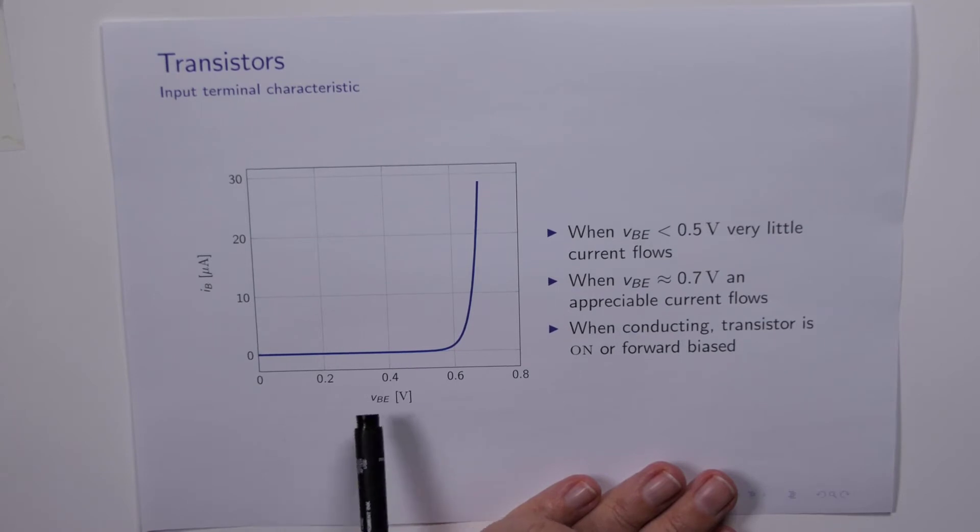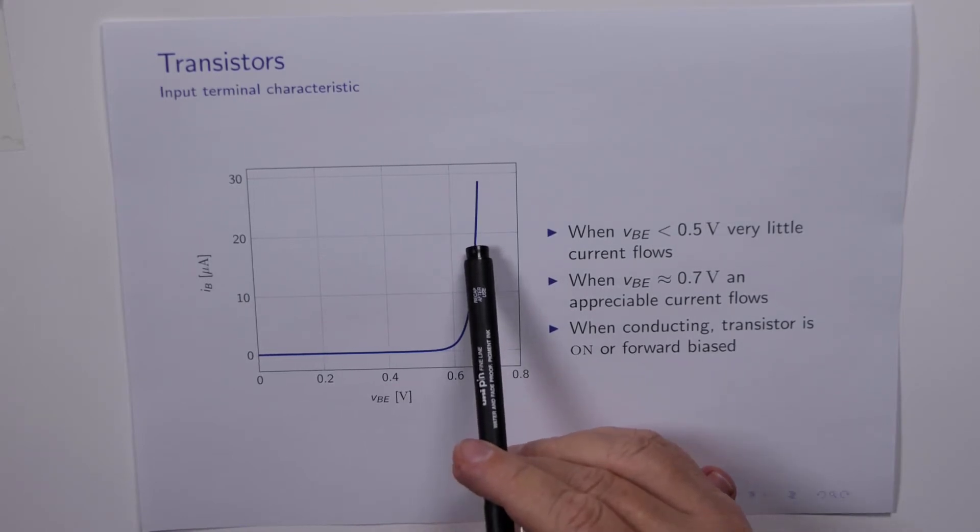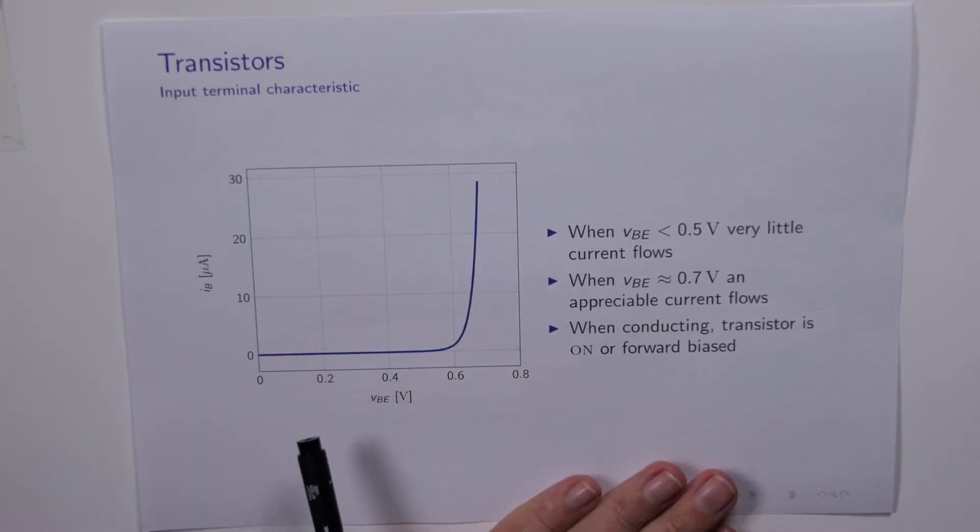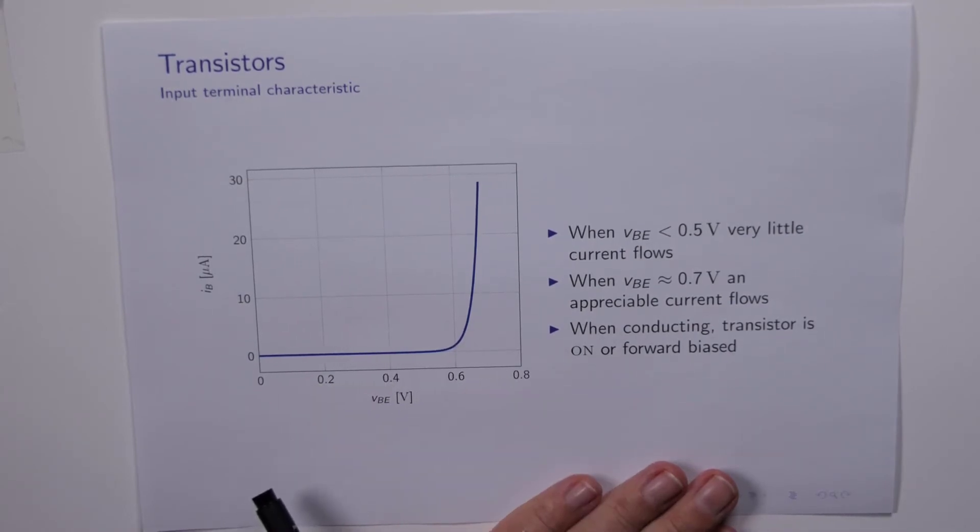So we notice that when VBE, which is plotted along the bottom here, IB up there, around about 0.5 of a volt there's almost no current flowing. And it's not until we get to about 0.7 of a volt that we get an appreciable current flowing. So this is identical to the behavior of the real diode.